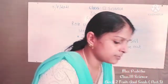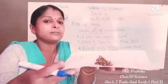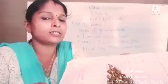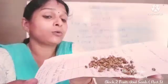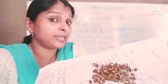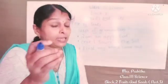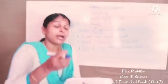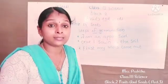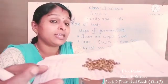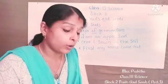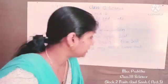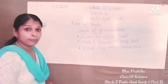See children, this is some germinated seeds. I took some green gram and made it wet for two days. Then we can find it started to germinate. So first, my roots come out.